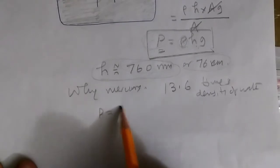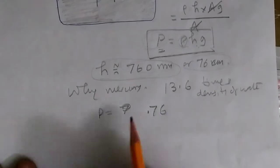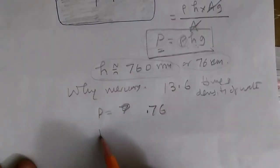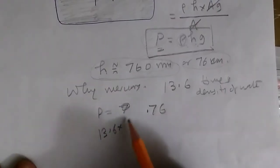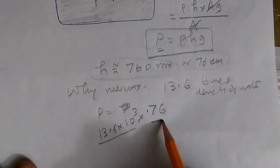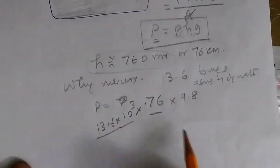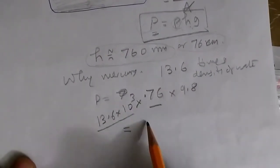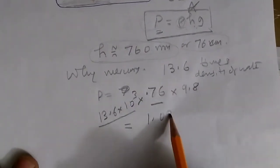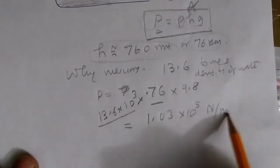For example, for atmospheric pressure, we have height is 760 mm. We can convert it to 0.76 meter. And rho is 13.6 times the density of water, which is 10 to the power 3. This is H and this is gravity, acceleration due to gravity is 9.8. And if you multiply the whole thing, you will get something like 1.03 into 10 to the power of 5 Newton per meter square.